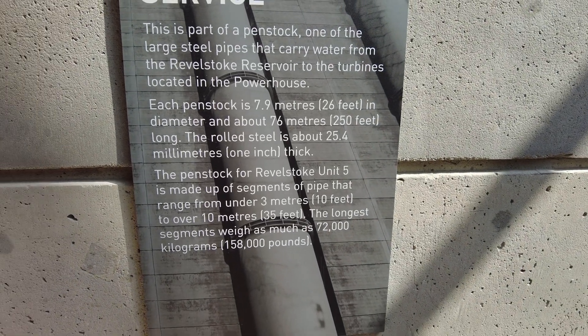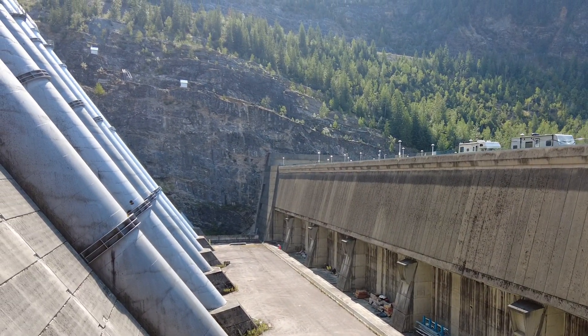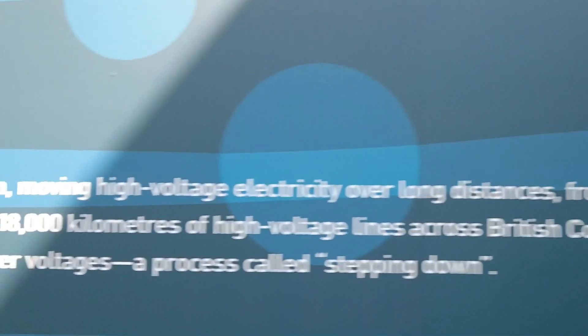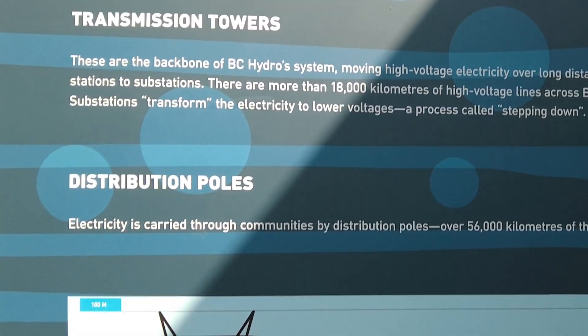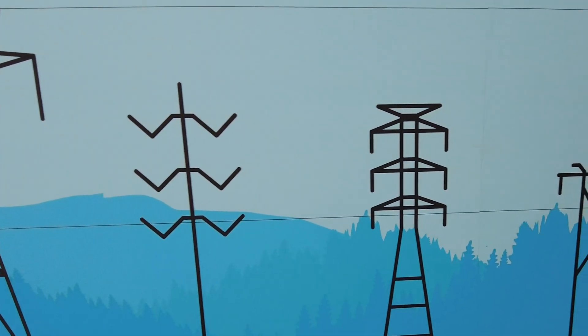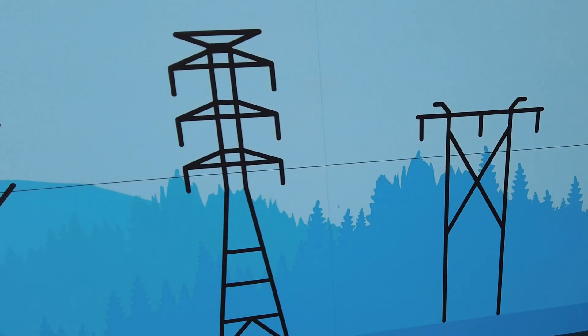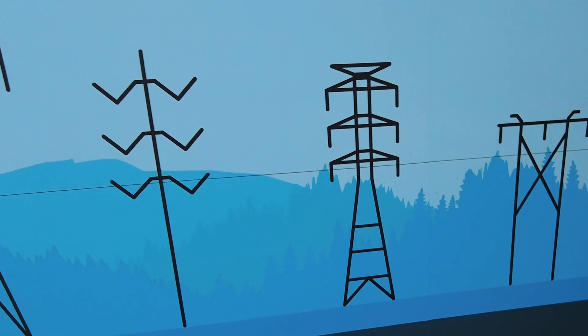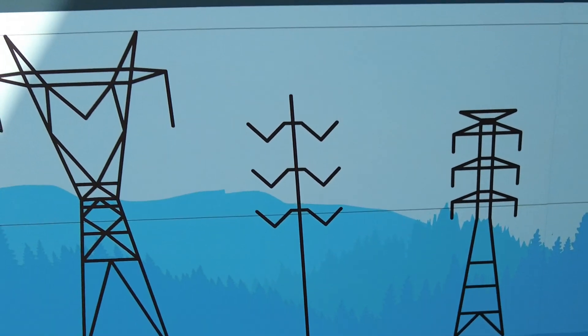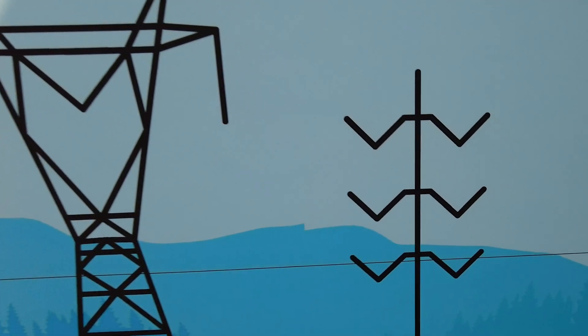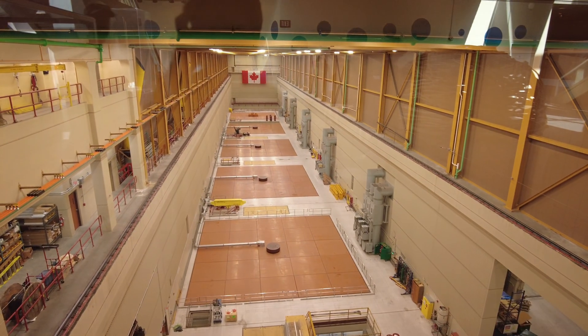The penstock is 26 feet in diameter, 250 feet long, rolled steel an inch thick. For the Revelstoke Unit 5, penstock segments ranged from under 3 meters (10 feet) to over 10 meters (35 feet), with the longest segments weighing as much as 72,000 kilos. Transmission towers are the backbone of BC Hydro's system, moving high voltage over long distances from generating stations to substations. There are more than 18,000 kilometers of high voltage lines across British Columbia. Substations transform electricity to lower voltages by stepping down.